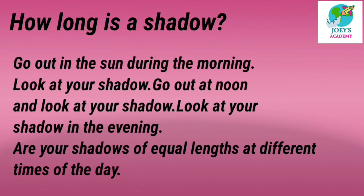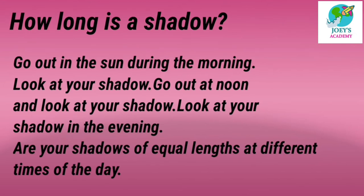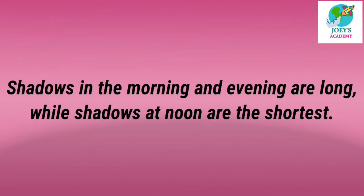How long is the shadow? Go out in the sun during the morning, look at your shadow. Go out at noon and look at your shadow. Look at your shadow in the evening. Are your shadows of equal lengths at different times of the day? आपको morning, noon and evening — ये तीनों time sun में जाकर आपकी shadow observe करनी है, उसकी length observe करनी है. क्या आपकी shadow तीनों time equal length की होगी? नहीं — morning, noon and evening की different length होगी. Shadows in the morning and evening are long, but shadows at noon are the shortest. Morning and evening की shadow long होगी, और noon में shadow short होगी.